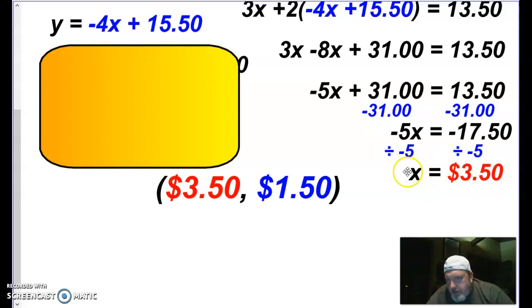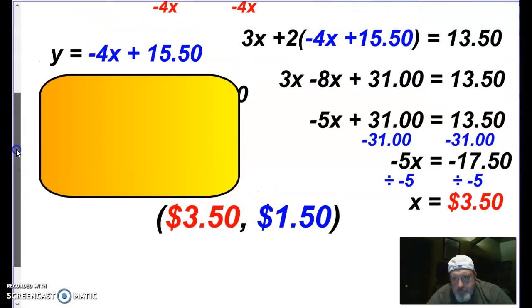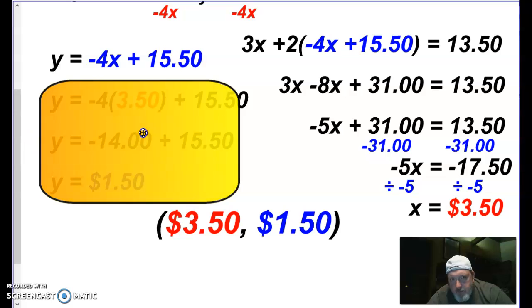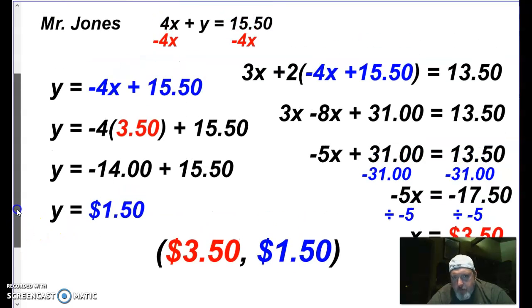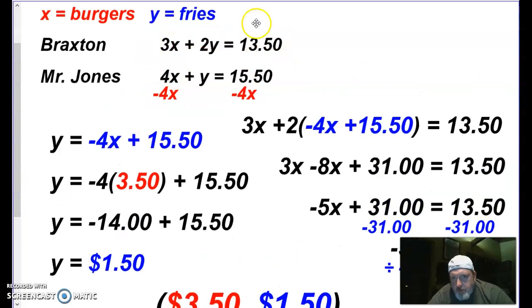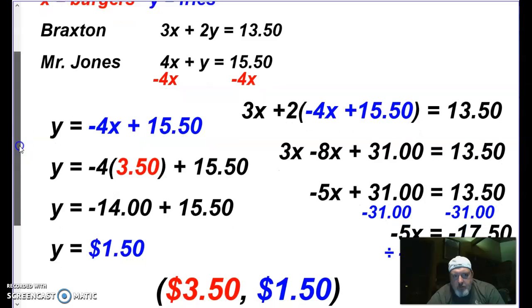Now that I know what the burger costs, I can plug it back into this equation. And I can figure out how much fries are. So negative 4 times $3.50 is negative 14. Add it to $15.50. And a fry is $1.50. So we got $3.50 per burger, $1.50 per French fry. Again, just like the problems at the start of the notes, we start with two equations. You're always looking for 1X or 1Y. That's the one that you're going to isolate. And then we can use substitution.